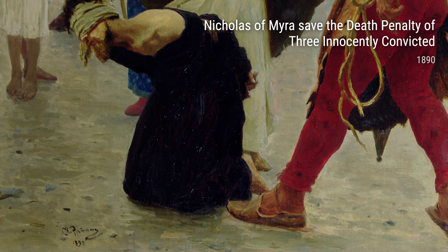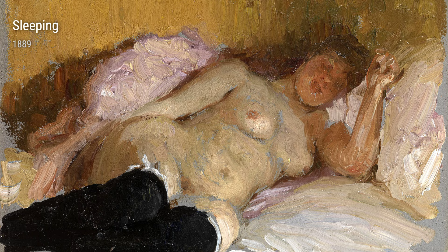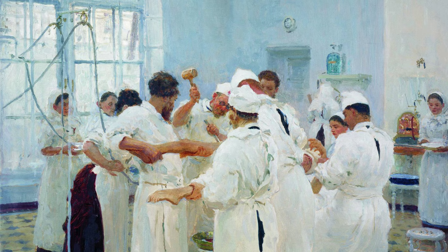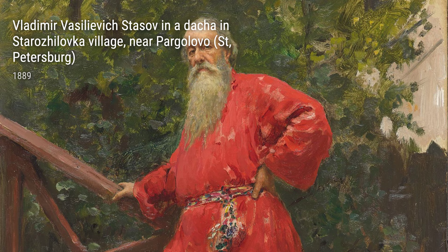These experiences deeply impacted him and he felt a strong desire to address these social issues through his art. In the late 1880s, Repin created several significant works that showcased his unique style and social consciousness. "Sleeping," painted in 1889, captures the peaceful vulnerability of a sleeping woman, reflecting the artist's fascination with human emotions and inner life.